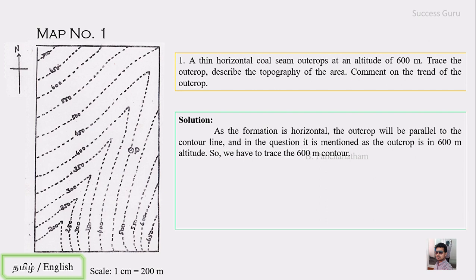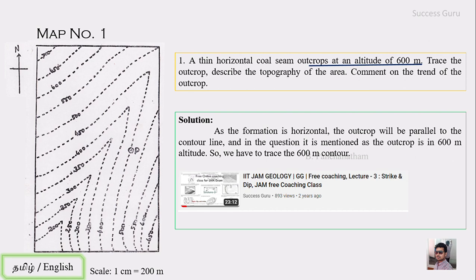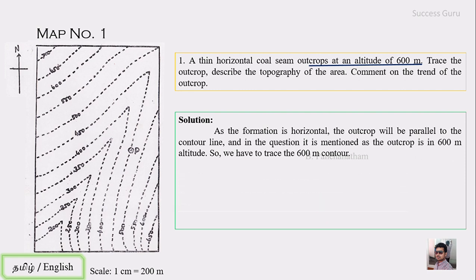A horizontal formation is parallel to the contours. The horizontal formation in this question is at a 600-meter height. Because it is horizontal and parallel, the outcrop simply follows the 600-meter contour. The 600-meter contour can be traced — it represents a topographical relationship between the formation and the landscape.